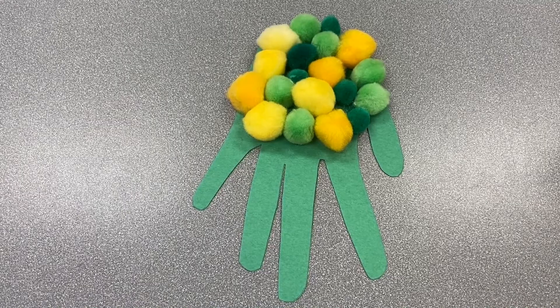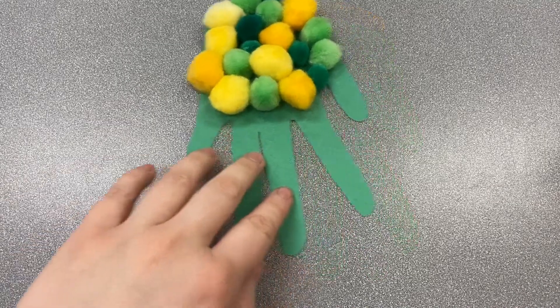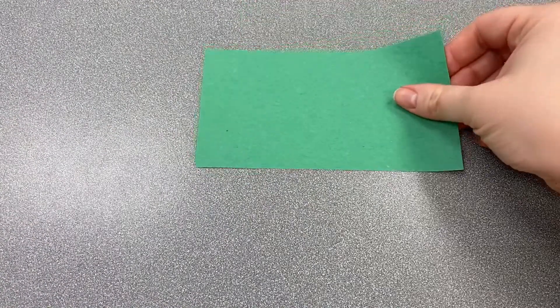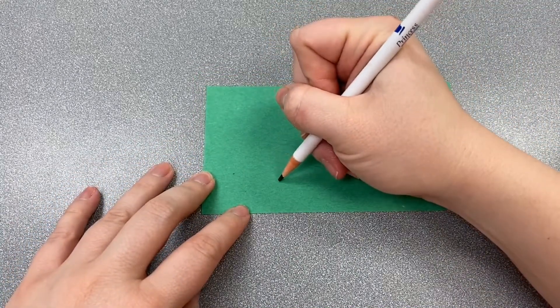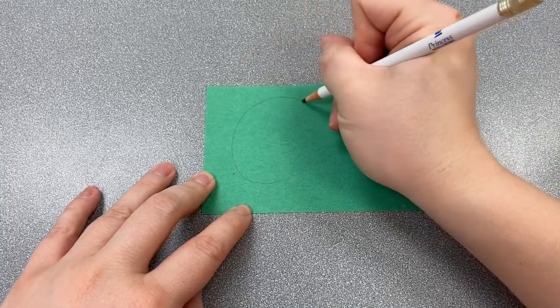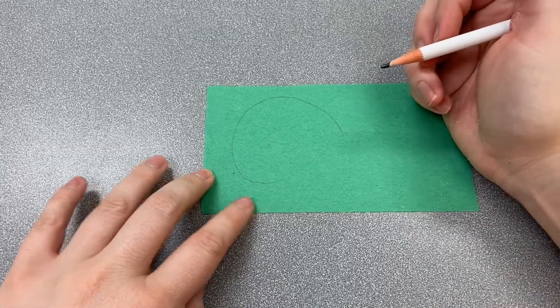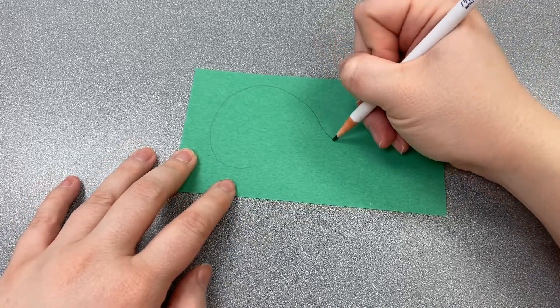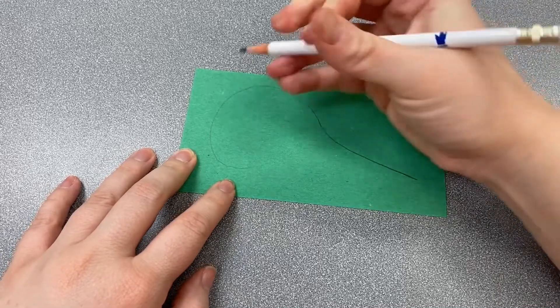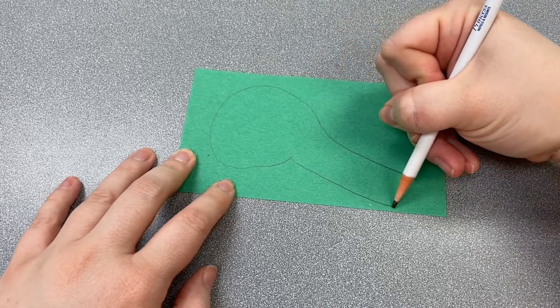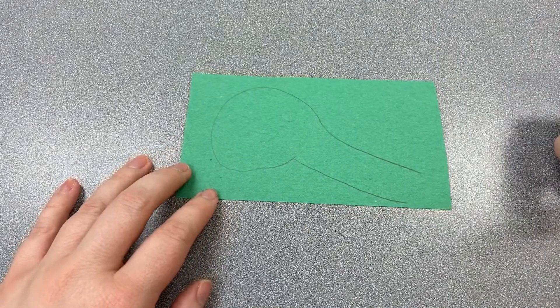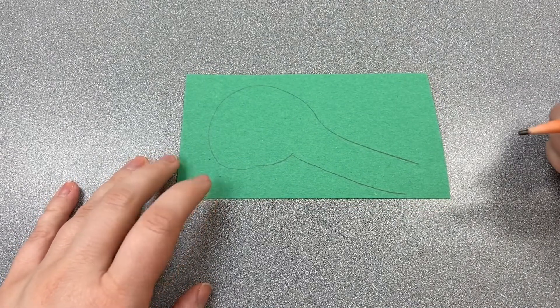While we wait for our pom-poms to dry on the handprint we're going to draw the turtle's head and neck. I'm going to take this little piece of green paper and draw a basic shape that kind of looks like this. We're going to make a rounded part for his head. There's a turtle head and then we're going to make a neck that's kind of long because we want to see it sticking out of the card after we glue it. Draw something like that. It doesn't have to look exactly like this or be perfect. Just try your best.